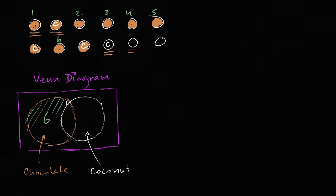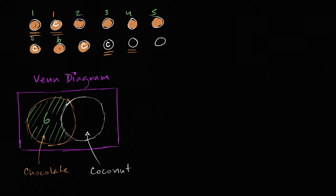I'm talking about just this area that I've shaded in green. Now, how many have chocolate and coconut? That's going to be one, two, three — so three of them have chocolate and coconut. That's this section here that's in the overlap between the two sets. These three go into both categories; they have coconut and they have chocolate. How many total have chocolate? Well, six plus three is nine.